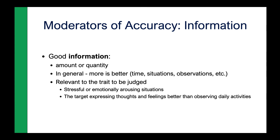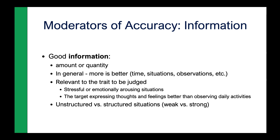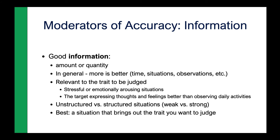Viewing people in an unstructured — also called a weak — situation will give you much more information than watching them in a structured or strong situation. The best information for accurately predicting someone's personality is observing them in a situation that brings out the very trait you want to judge. For example, if you're judging how sociable a person is, you'll get much more useful information by observing them at a party or in a group meeting rather than watching them interact one-on-one or by themselves.